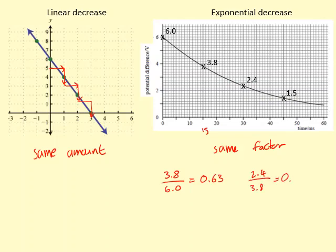which is 0.63 as well. And then when you go from 15 to 45, that's 1.5 over 2.4, it decreases by the same factor again, 0.63. So you can see this is what exponential decrease is: it decreases by the same factor for the same increase.